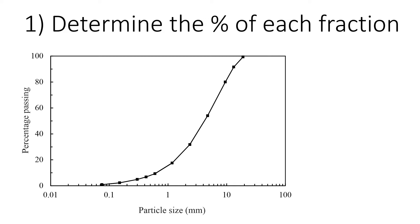Let's look at this curve and determine the percentage of each fraction. First, we'll determine how much sand and gravel there is, remembering that the boundary is 2.36 millimeters. We're going to draw a straight line at that boundary — everything on the right-hand side is gravel, and here we have sand. The second boundary is 0.075 millimeters, which I'm going to draw now. This boundary defines sand and fines.